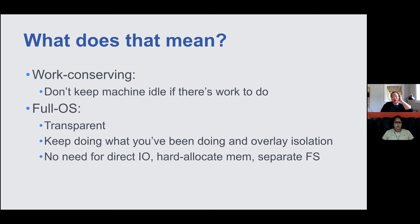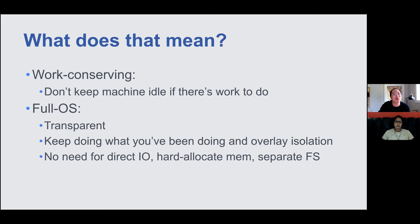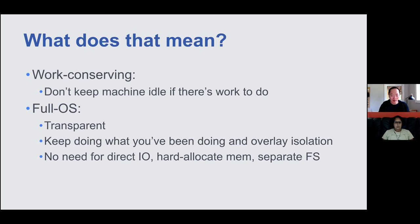The second part is 'full OS.' What this means is that we don't want applications to cater to special requirements to be resource-controlled. We don't want applications to have to use direct IO or use memory in a certain way. We want applications to keep doing what they've always been doing, and we want the operating system to layer resource control on top in a transparent way. So users and applications can do whatever they've been doing, and the OS is fully responsible for implementing resource control without disturbing how they use the system.